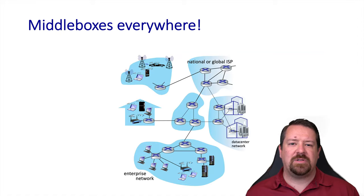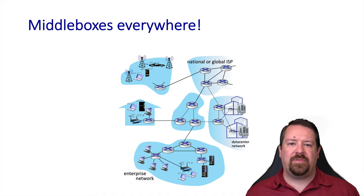While the Internet was designed with the principle of simplicity in the core in mind and keeping intelligence at the edge, in practice IP doesn't provide all of the features that we want from the core of the network. And so various middleboxes have been developed to add these features — this is especially true when it comes to implementing security in the network.